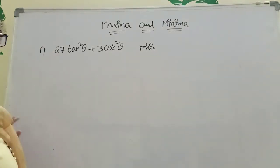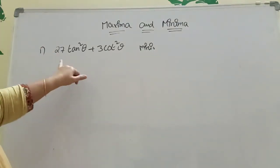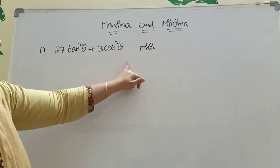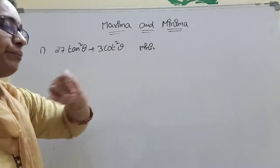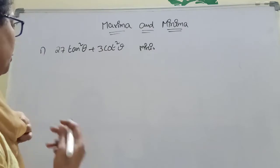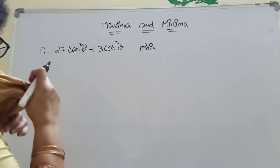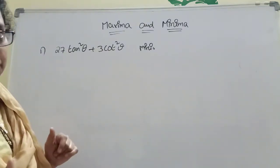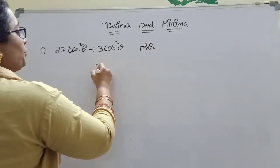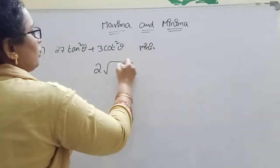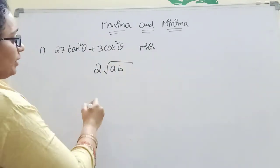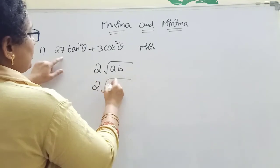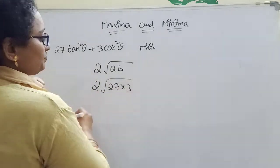Now, questions. This is the first question: 27·tan²θ + 3·cot²θ — find the minimum value. How to find the minimum value? I have told you the formula: 2 into root of AB. So 2 into root of — what is A? 27. What is B? 3.